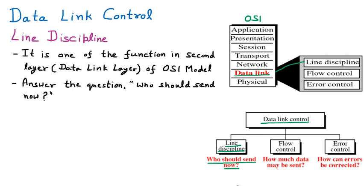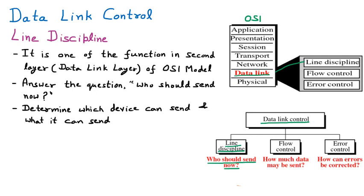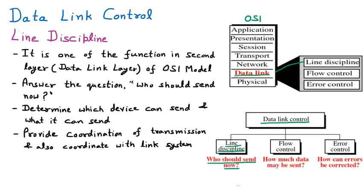Line discipline determines which device can send and what it can send. It is not only deciding who will start, but also informing what to say — meaning both what to send and when are decided by line discipline. It also provides coordination of transmission and coordinates with the link system, managing what transmission is ongoing and who should send.